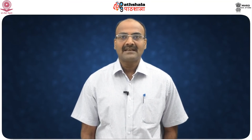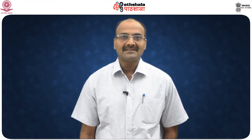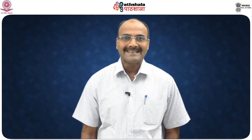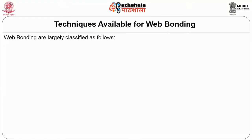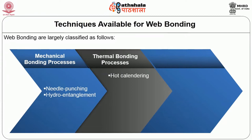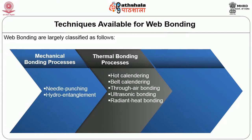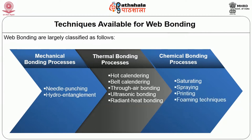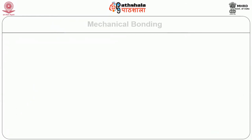However, it may also be carried out as a separate and distinct operation. In choosing the web consolidation method, the desired product properties — followed by economy, versatility, strength, softness, and primary absorbency needs — are to be taken into account. The techniques available for web bonding are largely classified as: the mechanical process (needle punching and hydro entanglement), the thermal bonding process (hot calendaring, belt calendaring, through-air bonding, ultrasonic bonding, radiant heating bonding), and the chemical bonding process (saturation, spraying, printing, and forming techniques).